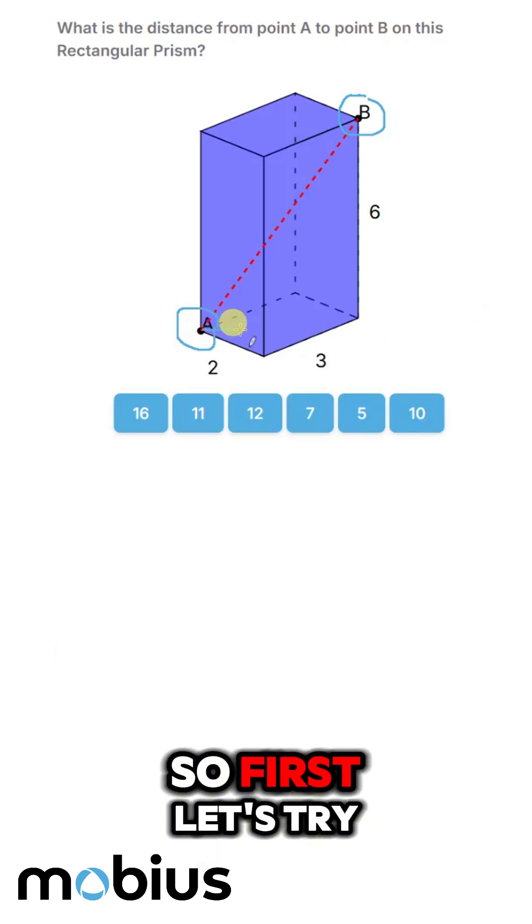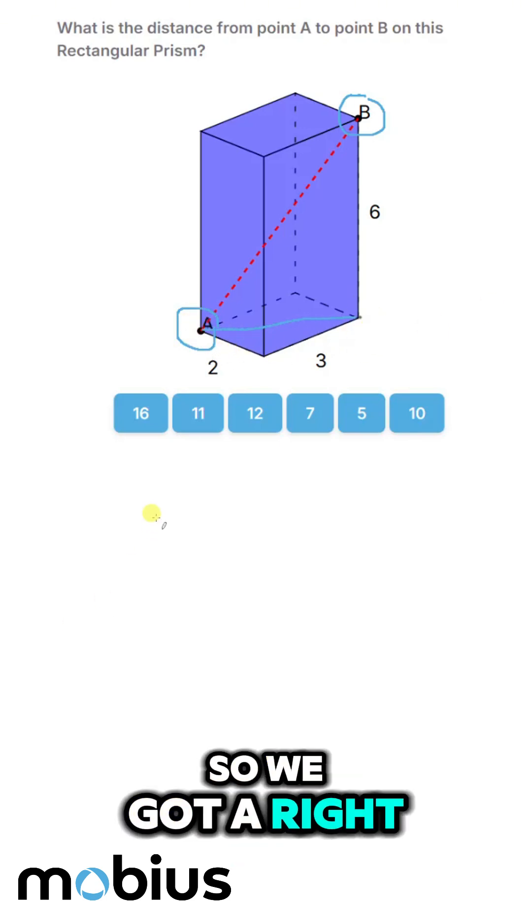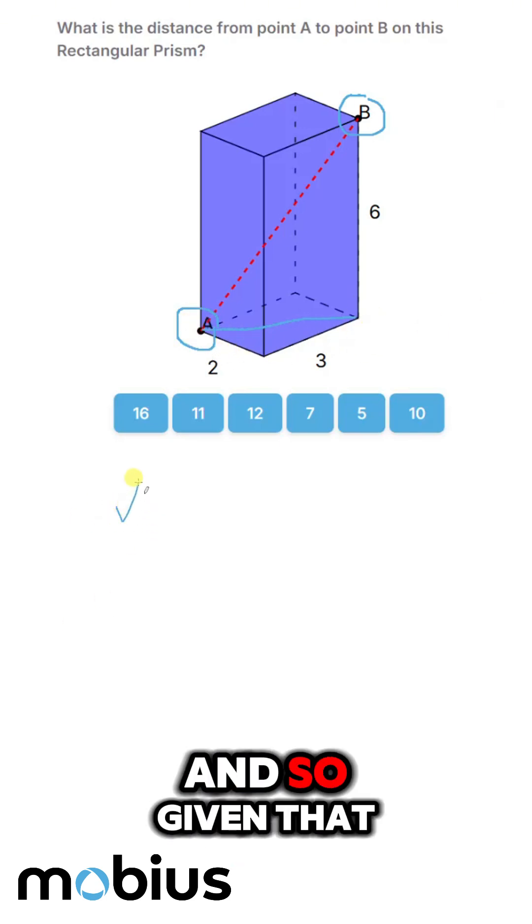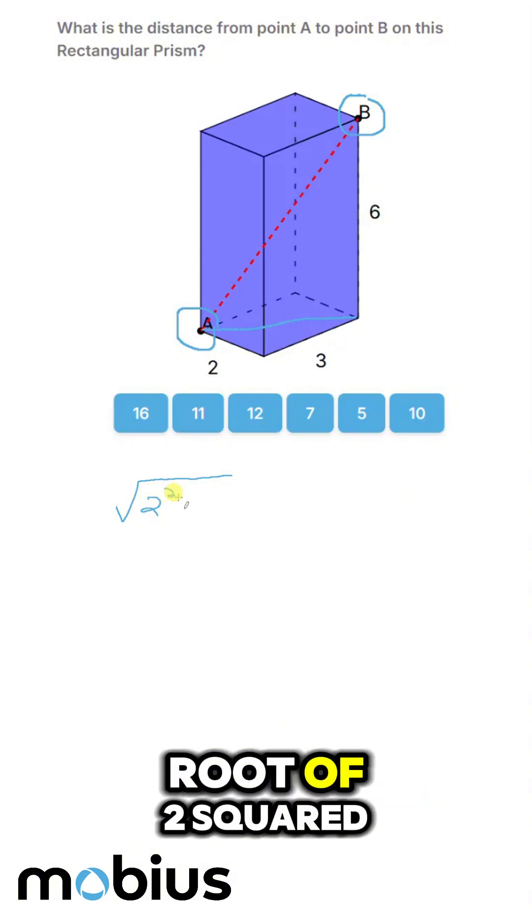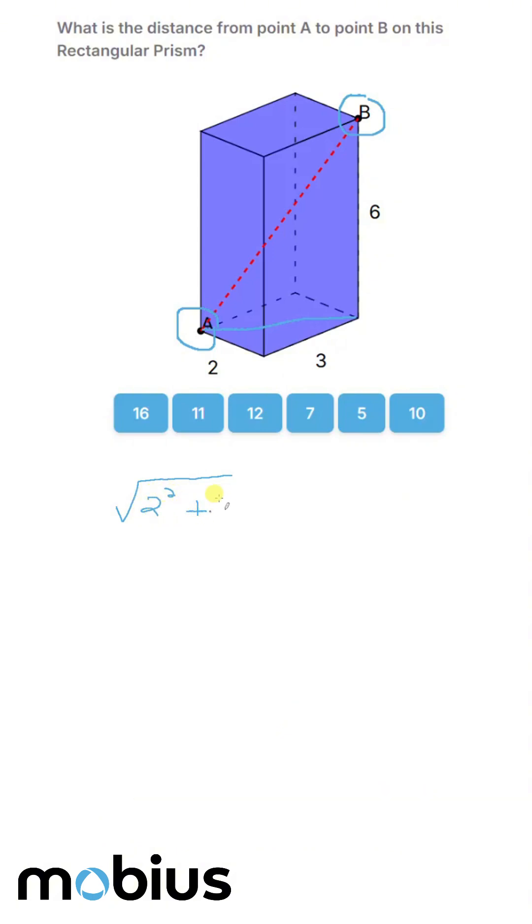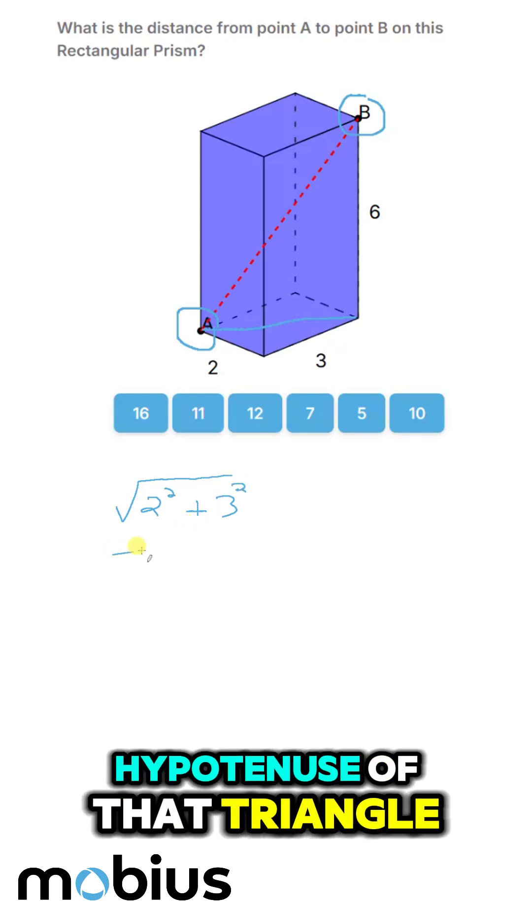So first, let's try and go across here. We've got a right-angle triangle, and so given that, we know the distance is going to be the root of 2 squared plus 3 squared, because we're finding the hypotenuse of that triangle.